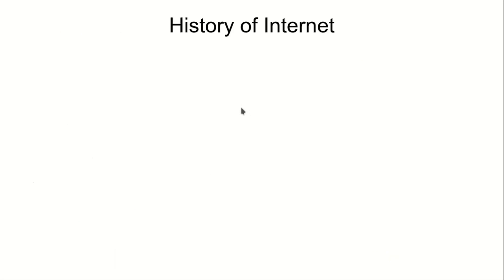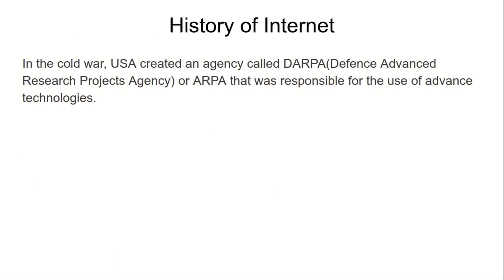After that, let's move to the history of the internet. In the Cold War, the USA had a clash with the Soviet Union. In this Cold War, the USA created an agency called DARPA — the Defense Advanced Research Projects Agency, also called ARPA. It was basically responsible for the use of advanced technology.